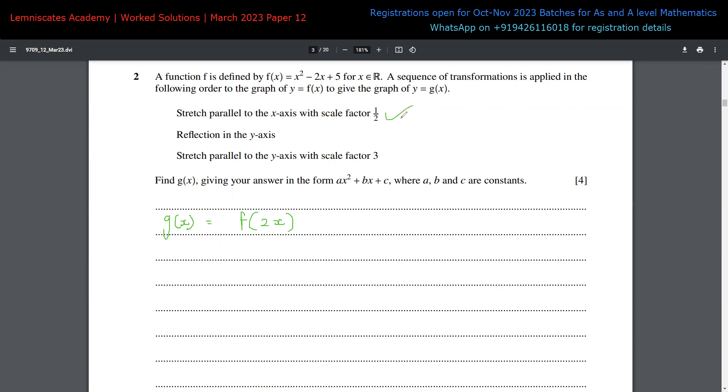If I'm having 2x written over here, it basically means that it's a stretch parallel to x-axis with a scale factor of 1 over this 2. So that's the first condition. The second condition is the reflection in y-axis.